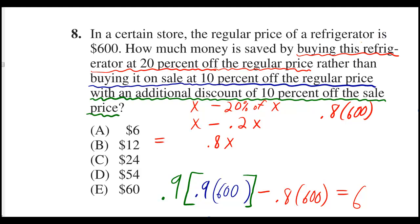In a certain store, the regular price of the refrigerator is $600. How much money is saved by buying this refrigerator at 20% off the regular price rather than buying it on sale at 10% off the regular price with an additional discount of 10% off the sale price?